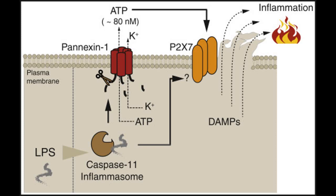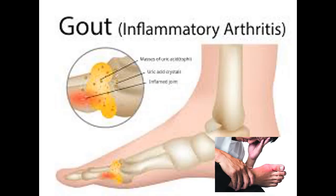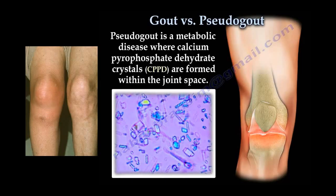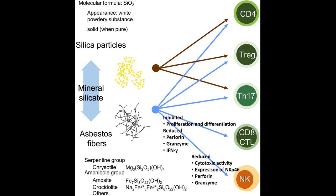Gout is a painful inflammatory condition of the joints long known to be caused by deposition of monosodium urate crystals in joints. Based on the understanding that urate crystals activate the inflammasome, IL-1 antagonists have been used to effectively treat cases of severe gout resistant to conventional anti-inflammatory drugs. Similarly, pseudogout is caused by deposition of calcium pyrophosphate crystals and inflammasome activation. Occupational inhalation of silica and asbestos can cause chronic inflammatory and fibrotic disease of the lung, and there is interest in blocking the inflammasome or IL-1 to treat these diseases.